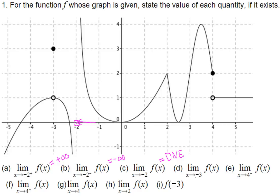Part d: what is the limit of the function when x approaches negative 3? There is no plus or minus, so we check from both sides. Negative 3 is here — when x approaches negative 3 from either side, the function values approach this hole, which is 1. At exactly negative 3 the value is 3, but the limit, where x is very close from either side, is 1.